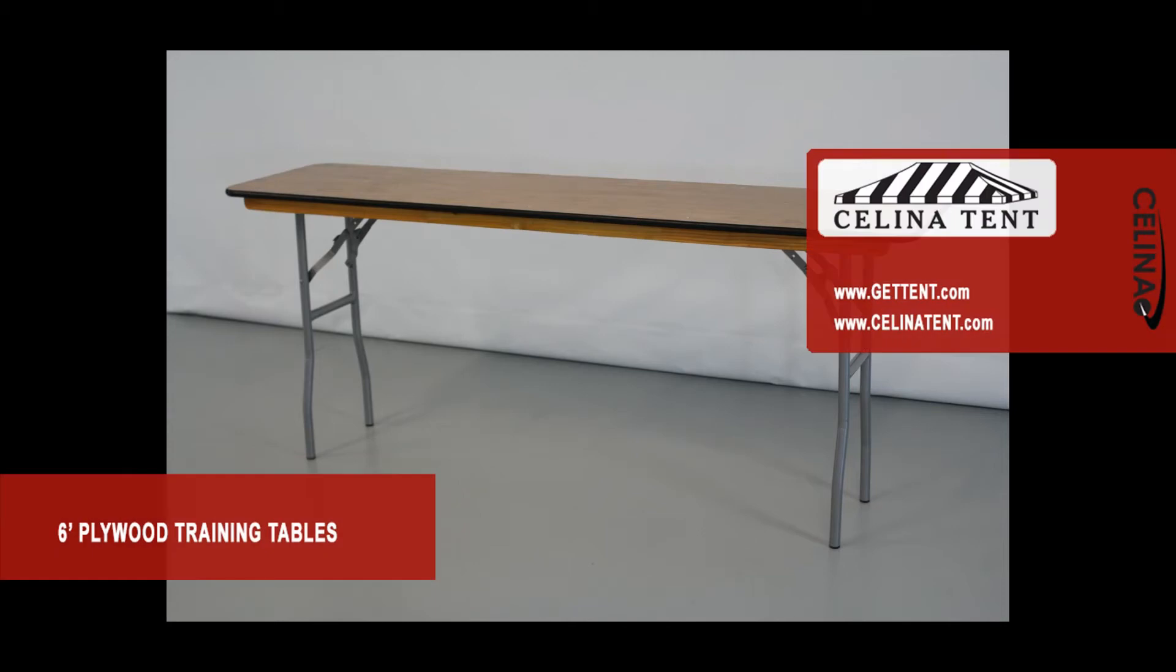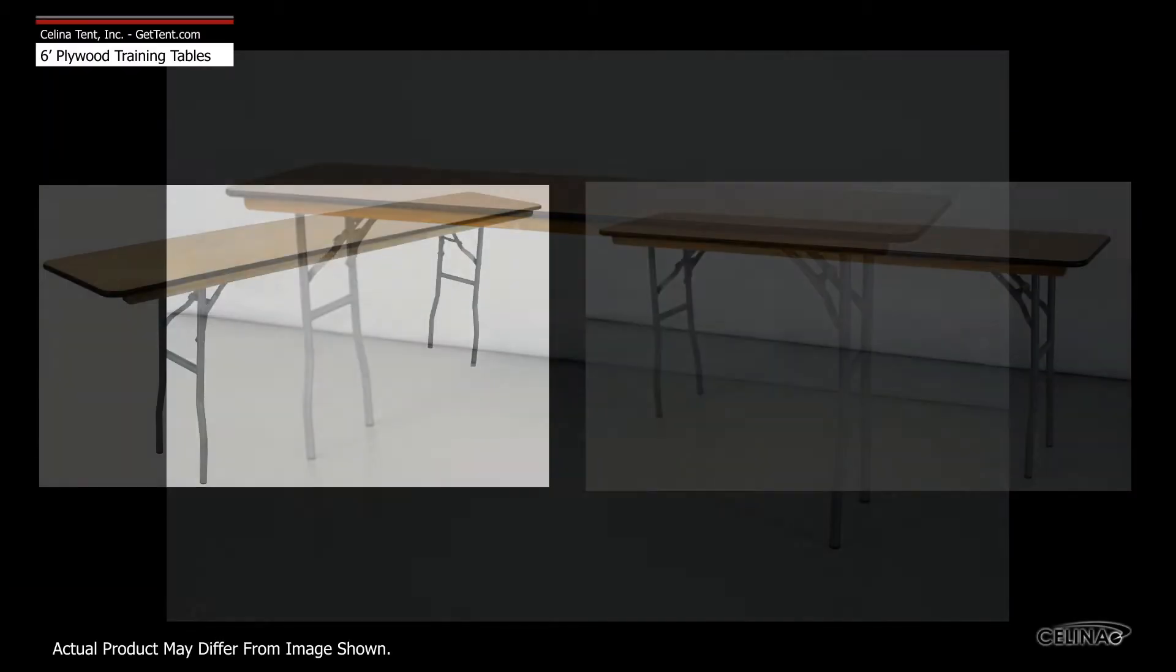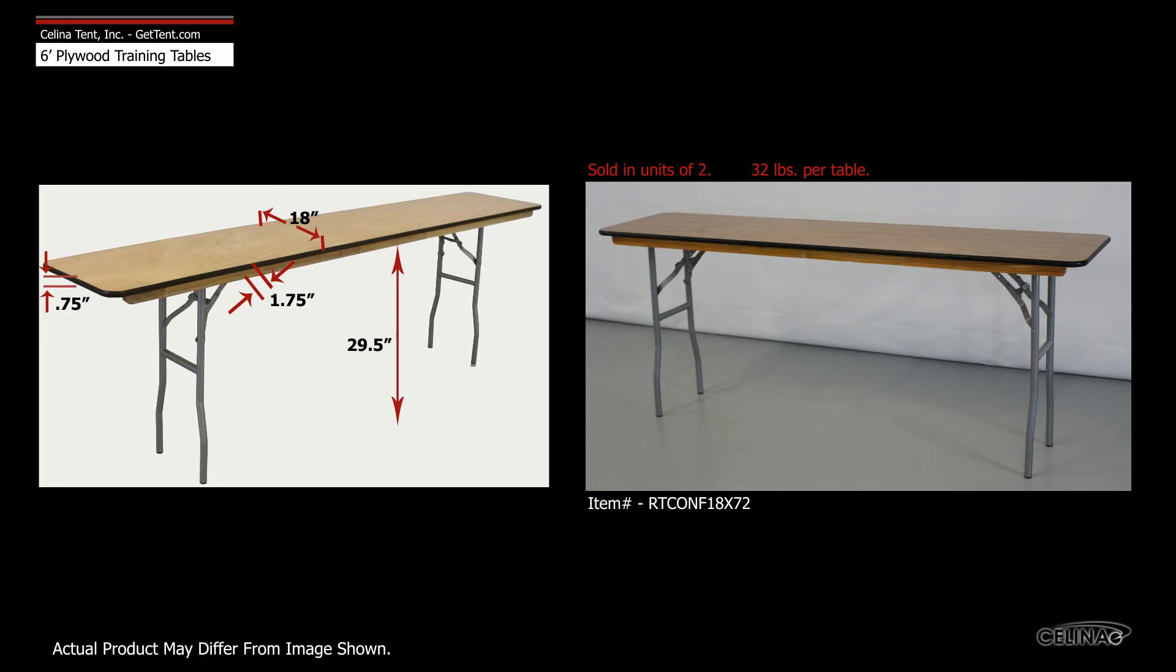Celina's six-foot plywood training tables are lacquer-topped, steel-legged folding tables with a narrow top to aid in instructional situations. The lesson depth lets more tables be arranged in a finite space.